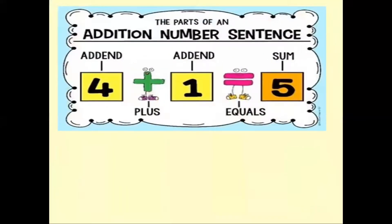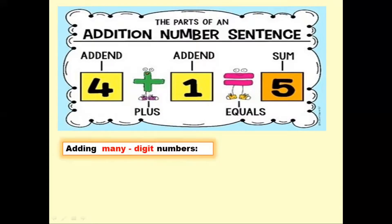Before we start our lesson, let's talk about the parts of an addition sentence. Here we have: four plus one equals five. The numbers to be added — four and one — are called addends. The sign of addition is called plus, and the sign of equality is called equals. The number resulting from addition is called the sum or total. Here, number five is the sum of four and one.